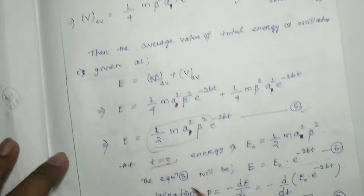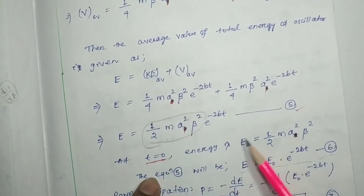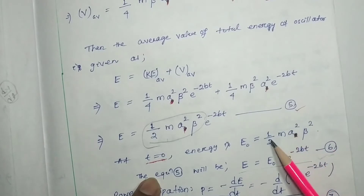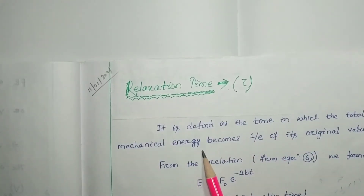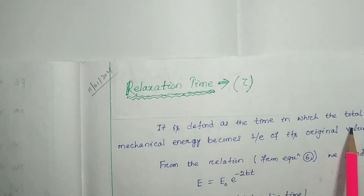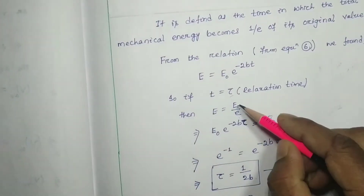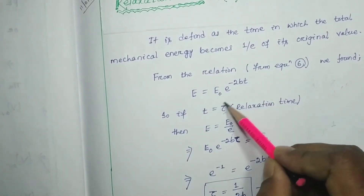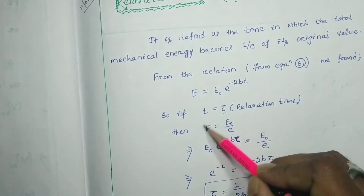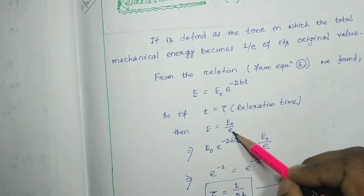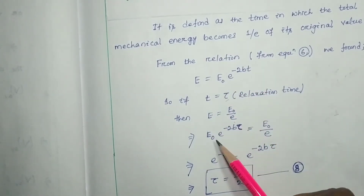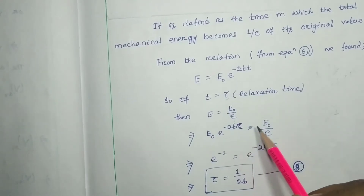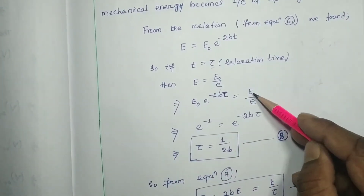The maximum energy E₀ is obtained when t equals 0, giving E₀ = (1/2)mA²ω². As per the definition, relaxation time is the time in which total mechanical energy reduces to 1/e of its original value E₀. If we consider this time to be tau, the relaxation time, then the energy at tau will be E₀/e. So we put: E₀ · e^(−2Bτ) = E₀/e.